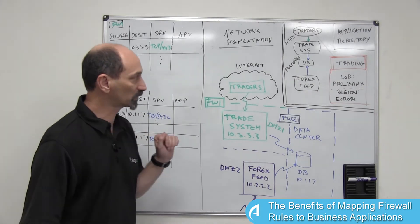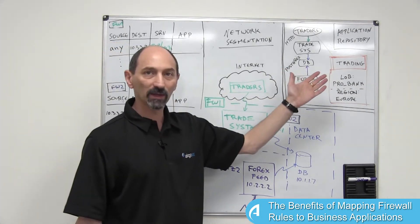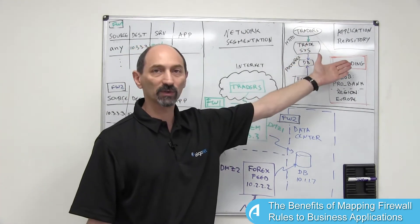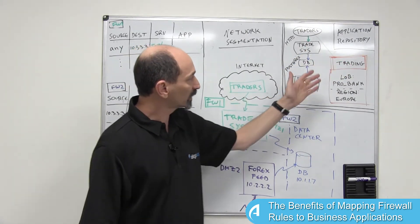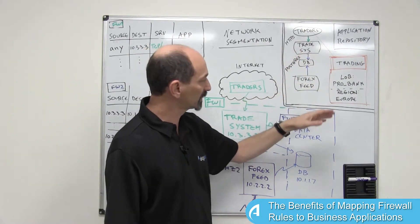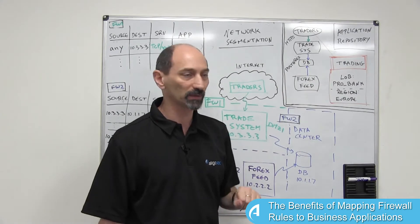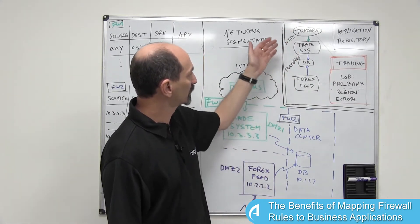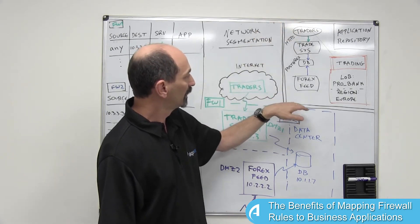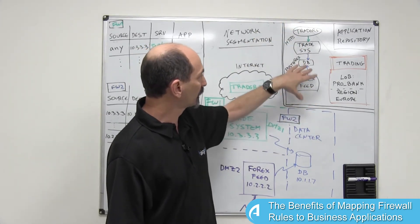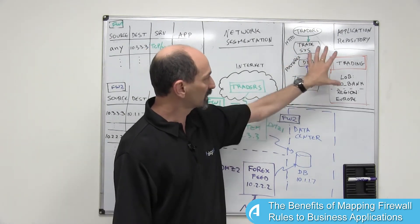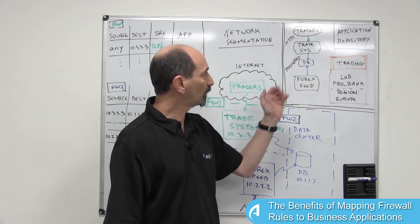Let's contrast this level of information with what's going on in the application repository. The application owners in the organization have an application repository system in which they have a record of a trading application that belongs to the professional banking line of business and supports the European region and is structured more or less like this. There is a trading system, the traders connect to it using HTTPS, there is a foreign exchange feed and both of these systems connect to the database sitting behind all this. So this is the viewpoint for the application owners.